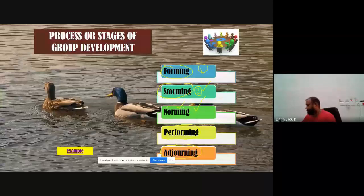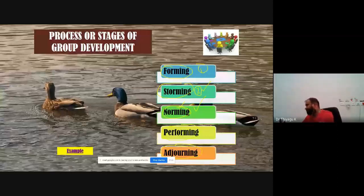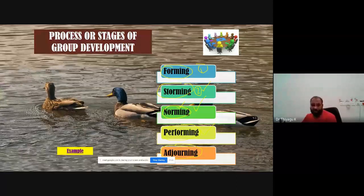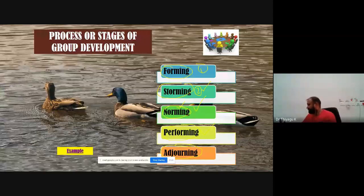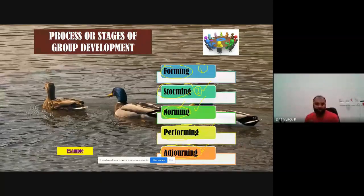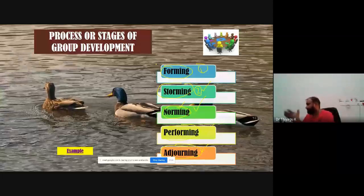Particularly in the second group, they assigned the work: 'I'm going to color, you are going to draw' — they assigned tasks to each group member. The task is assigned either by the group leader or by individual members themselves. That is called norming. After fixing the norming, they started to draw — that is called performing. Once the task is 100% over, after I gave the concluding remarks, you are no longer watching the Google Jamboard because the group task is over. That is called adjourning.